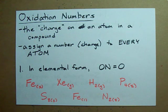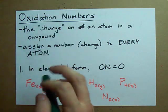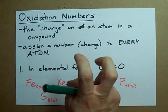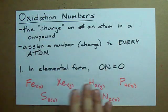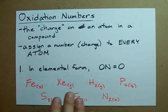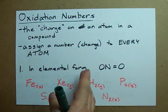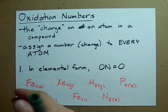What I need you to remember is that an oxidation number is basically the charge on an atom in a compound, even though that's not strictly true. It's a charge that we assign.